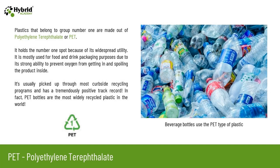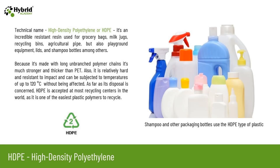Plastics in group number one are made out of polyethylene terephthalate, or PET. It holds the number one spot because of its widespread utility. It is mostly used for food and drink packaging due to its strong ability to prevent oxygen from getting in and spoiling the product inside. It's usually picked up through most curbside recycling programs, and PET bottles are the most widely recycled plastics in the world. All beverage bottles use PET type of plastic.